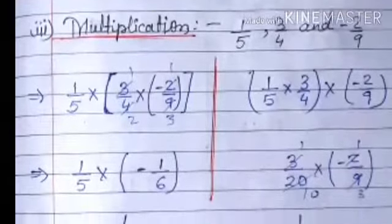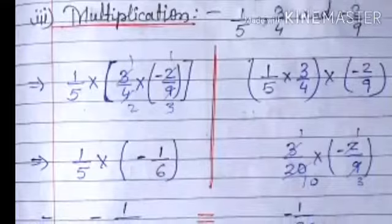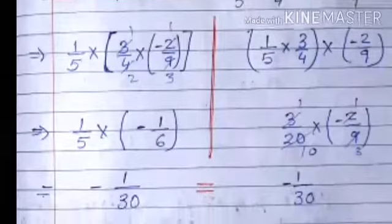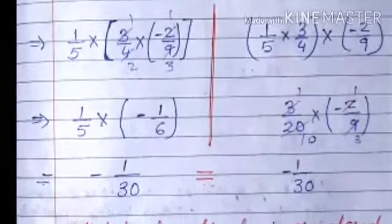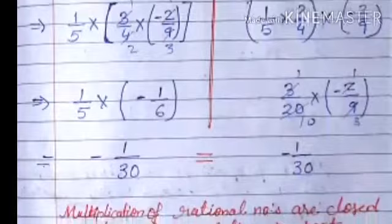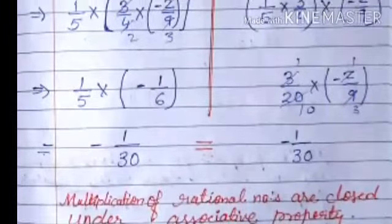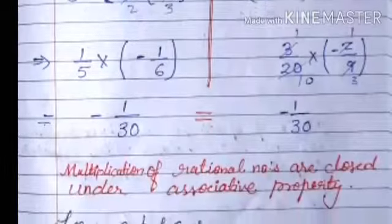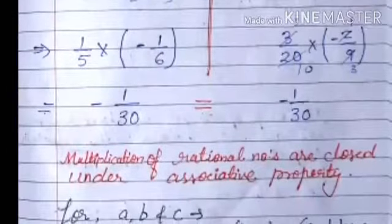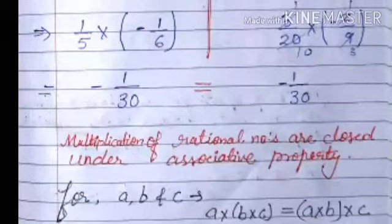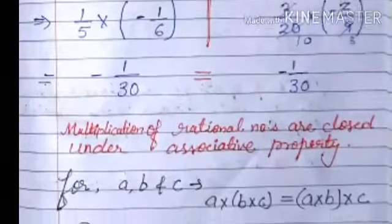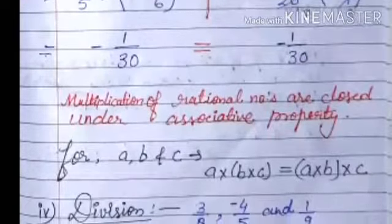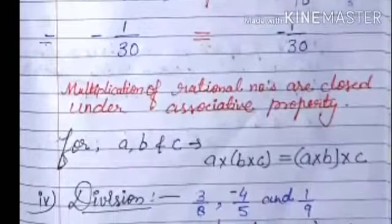For the next operation, multiplication, we have three rational numbers: one upon five, three upon four, and minus two upon three. We multiply all three rational numbers in both groupings as shown. Both sides give minus one upon thirty, which are equal. So multiplication of rational numbers is closed under associative property — that is, a multiplied by (b into c) equals (a multiplied by b) multiplied by c.